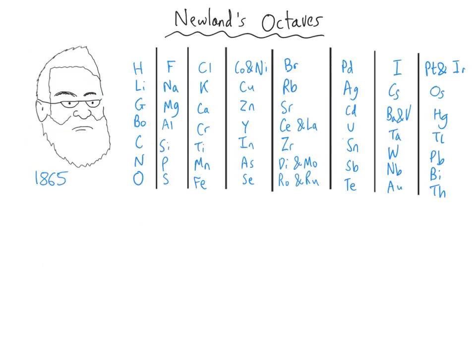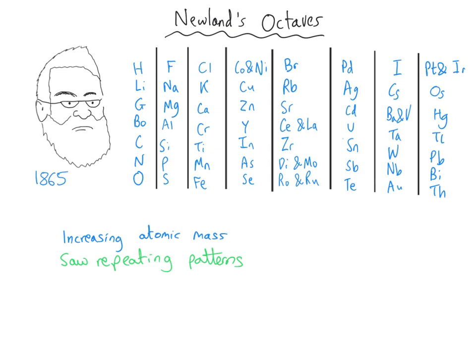Moving on to the work of John Newlands — he arranged the elements in order of increasing atomic mass, and you can read his periodic table by starting with hydrogen and working your way downwards through the groups, then moving on to the next column. Not only did he use increasing atomic weight, he also saw repeating patterns, which are at the very heart of the periodic table's design.